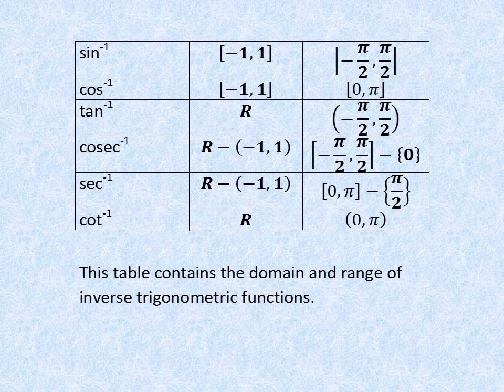Now there is a very important question: what is the range of sine inverse other than the principal branch range? You can answer pi by 2 to 3 pi by 2 or 3 pi by 2 to 5 pi by 2. Similarly, if the question is asked what is the range of cos inverse other than the principal branch range, then your answer should be pi to 2 pi or 2 pi to 3 pi and so on.